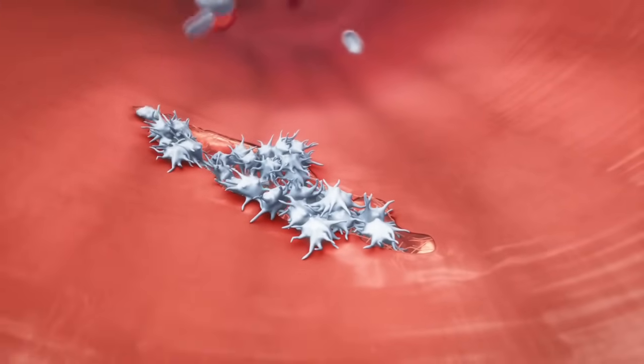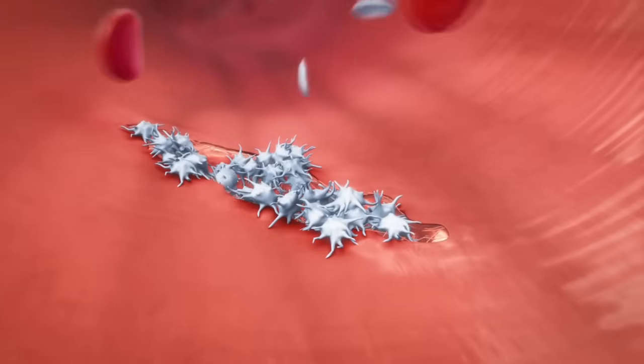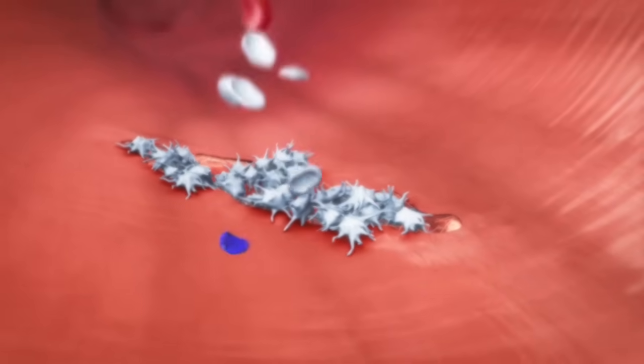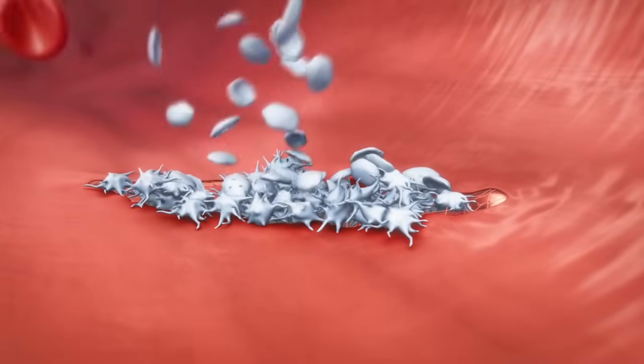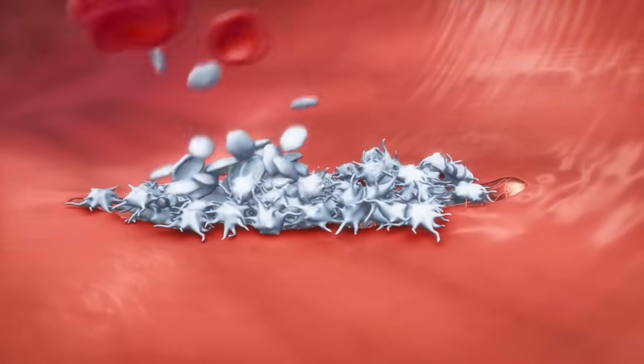Activated platelets also trigger the coagulation cascade and thus the formation of thrombin. Thrombin, in turn, stimulates platelet activation even further, a continuous feedback loop.